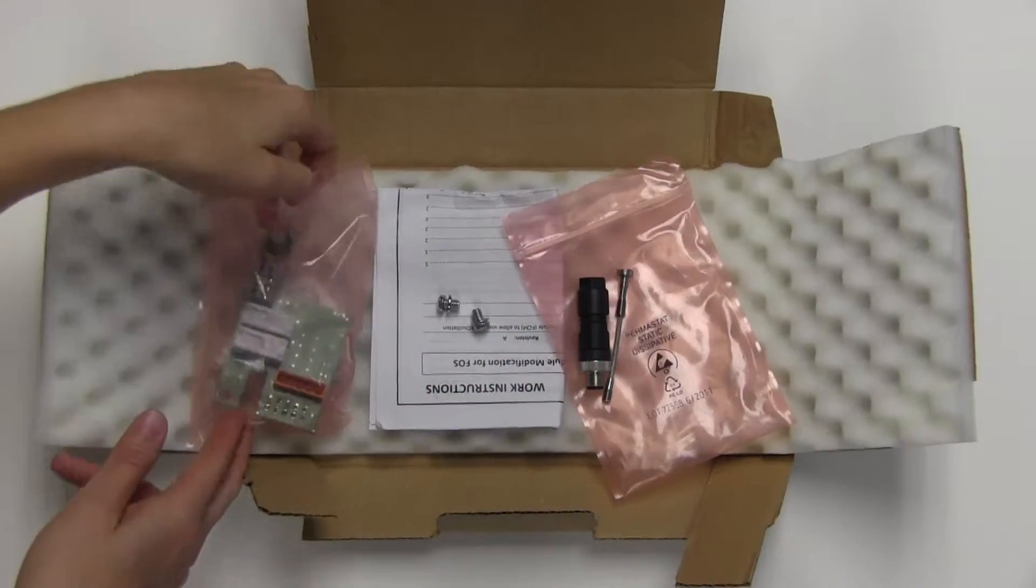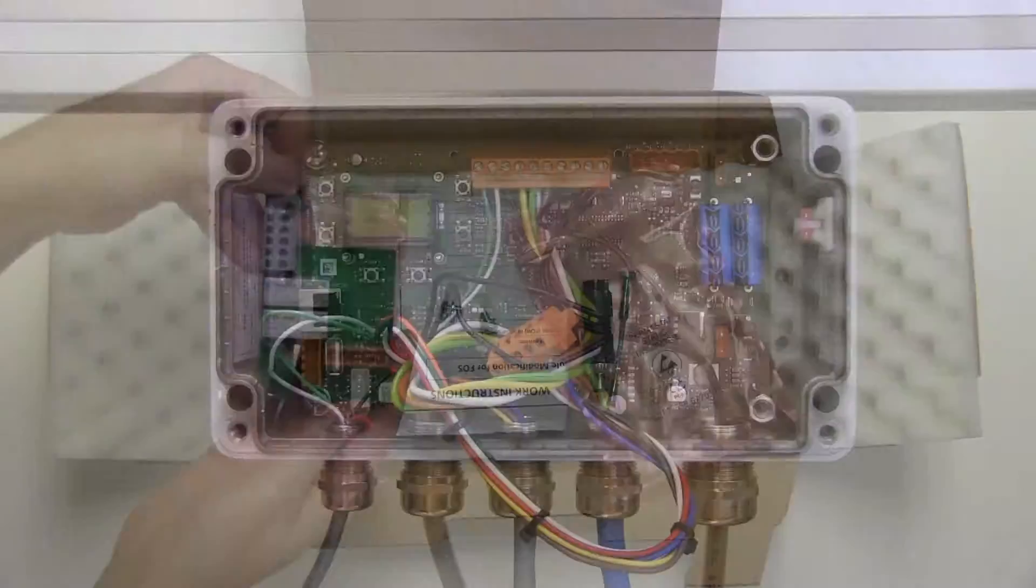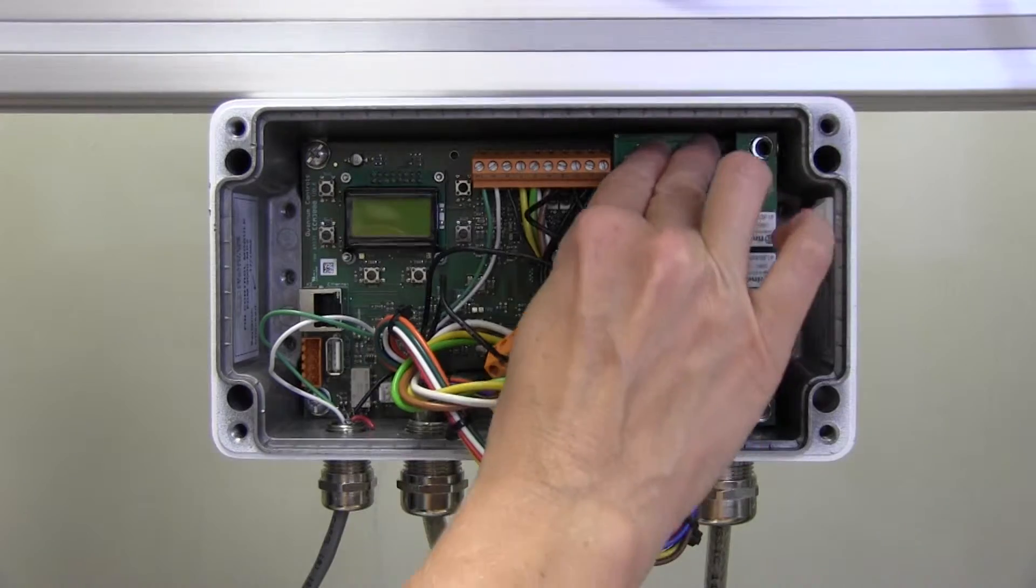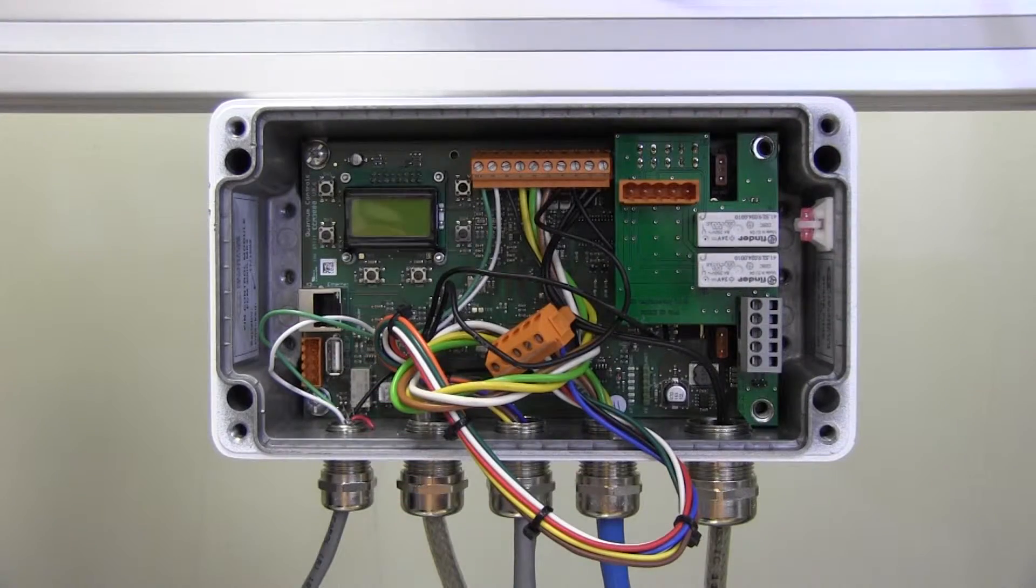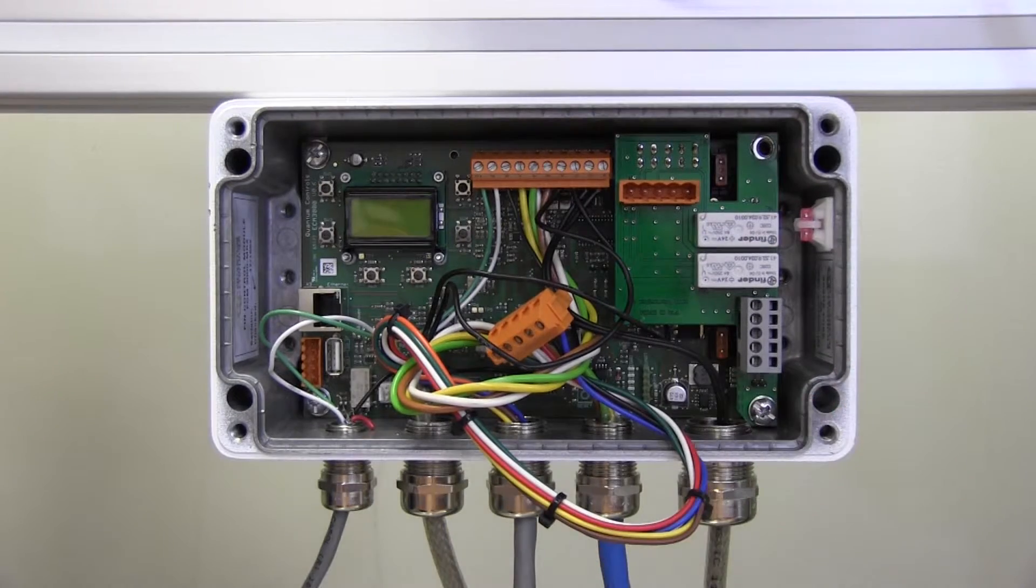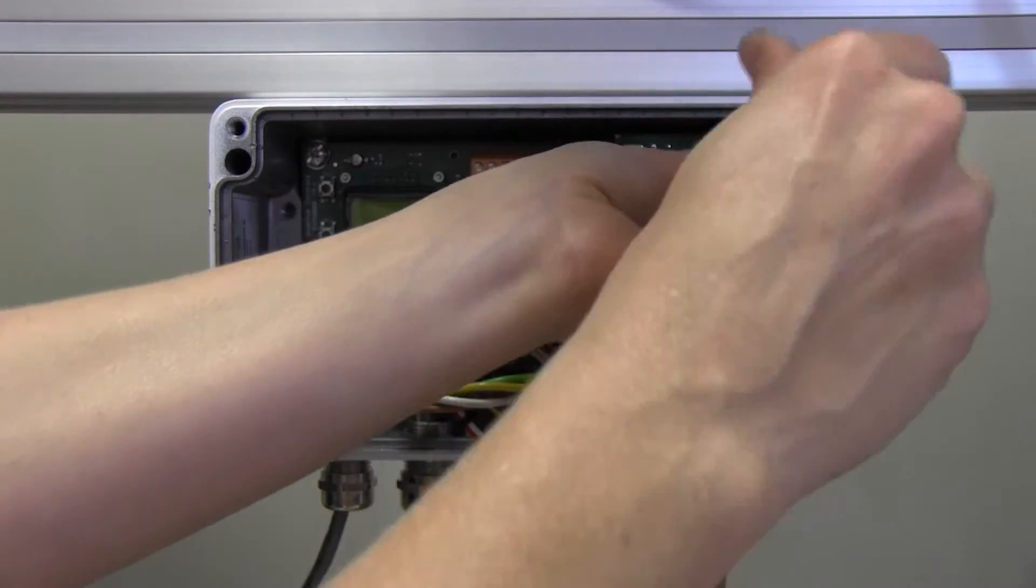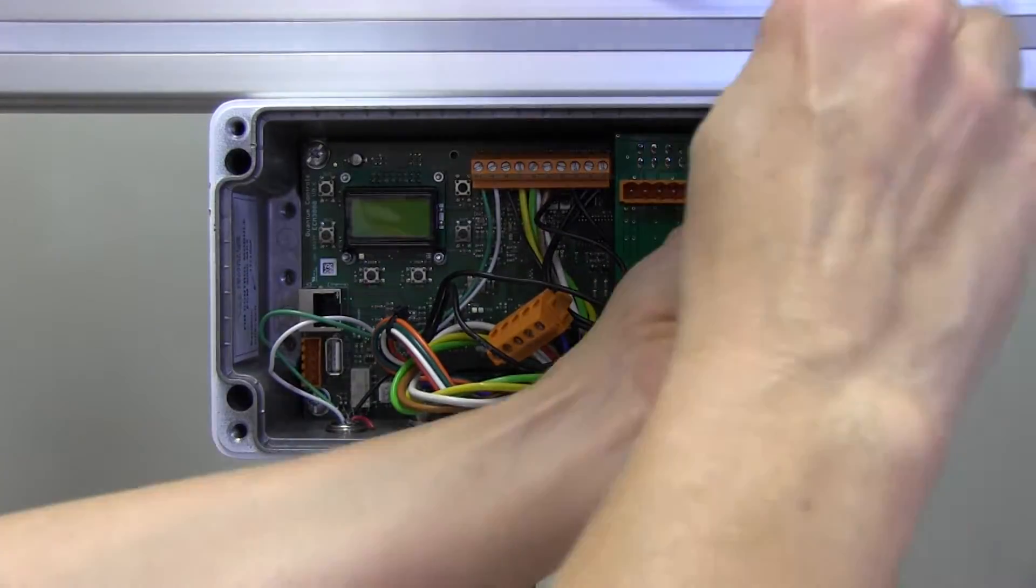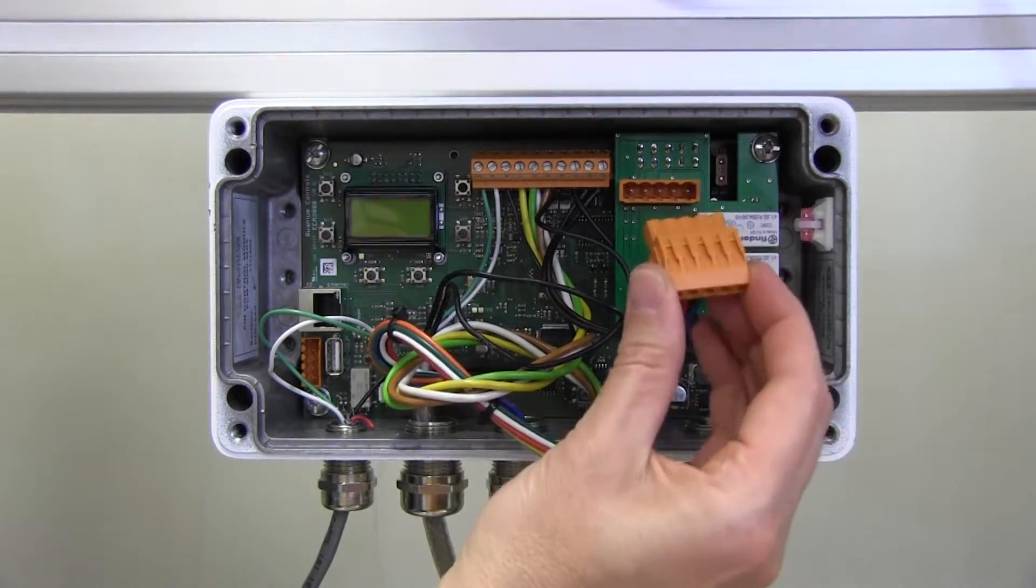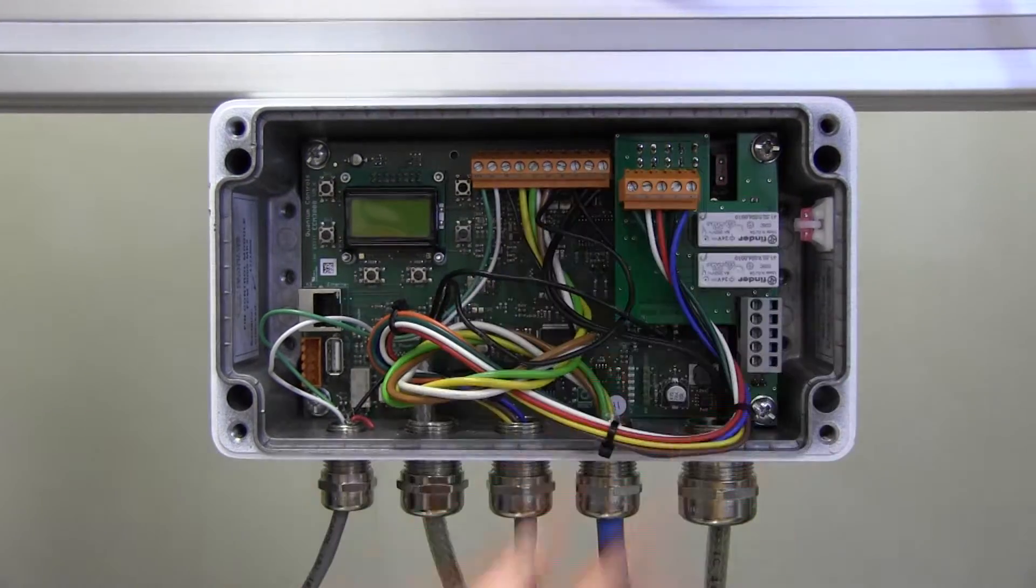Install the provided interface board by pressing the X2 connector on the interface board into the J1 receiver in the fin control module circuit board. Install the two previously removed screws to secure the interface board to the fin control module circuit board. Then, install the 5-point orange connector onto the X1 receiver on the interface board.